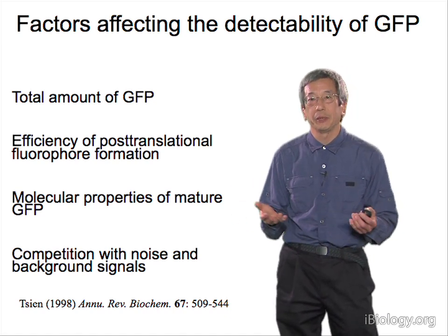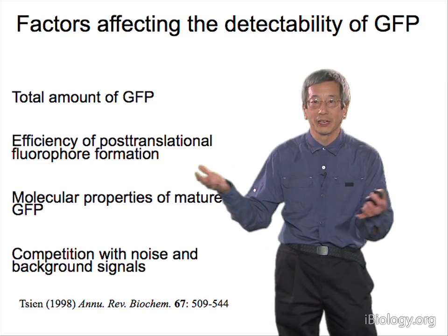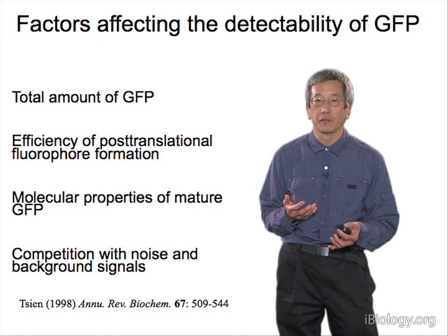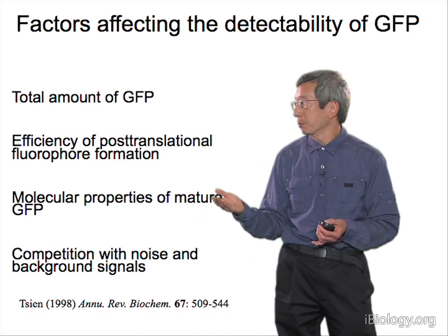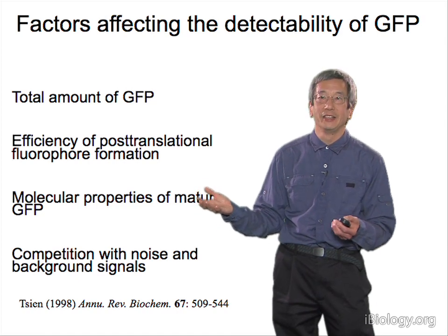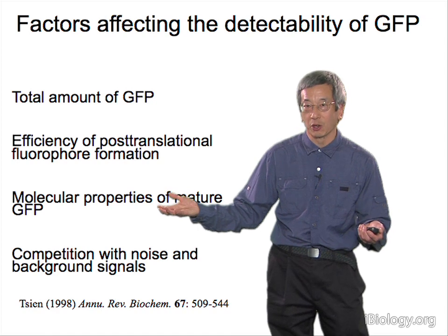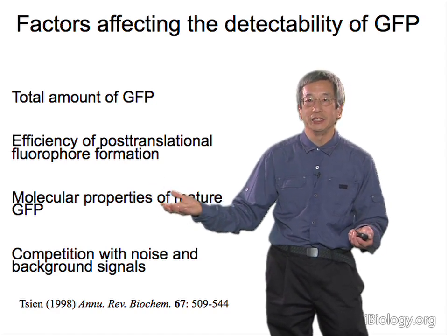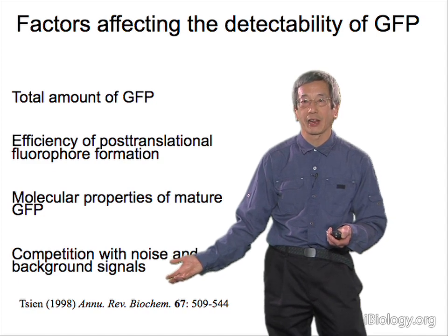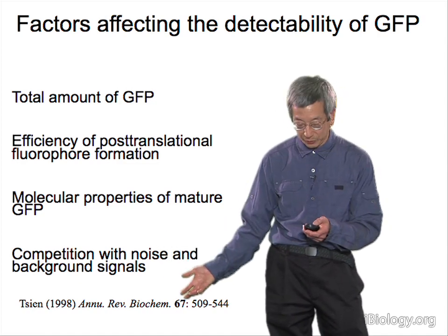The first is you've just got to make enough GFP — GFP is not infinitely bright. The next is that having made the protein by protein synthesis off the ribosome, you have to make sure it does a good job of post-translationally making that fluorophore. The third category is the molecular properties of the mature GFP. And finally, you have to remember that you have to detect these signals in competition with noise and background, which is present in fluorescence. A lot of this microscopy course will teach you how to optimize that balance.